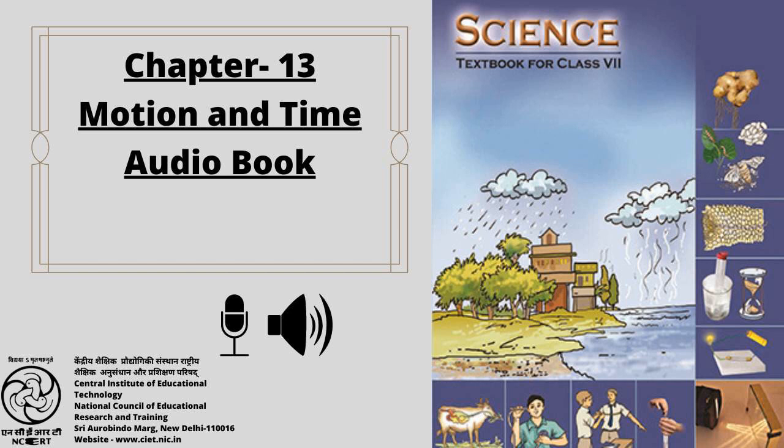Did you know? Timekeeping services in India are provided by the National Physical Laboratory, New Delhi, with accuracy of one millionth of a second. The most accurate clock, developed by the National Institute of Standards and Technology in the USA, will lose or gain only one second after running 20 million years. This concludes Chapter 13 of 18 chapters. Narrator: Akash Ahuja. Producer: Vandana Arimardhan. Presented by CIET, NCERT, New Delhi, India.